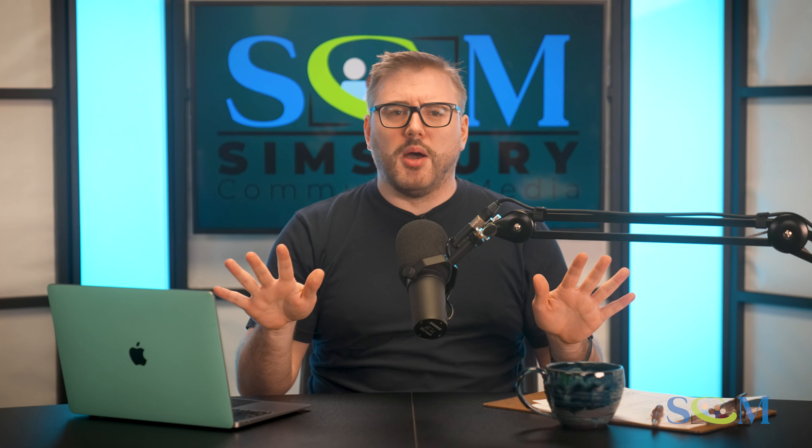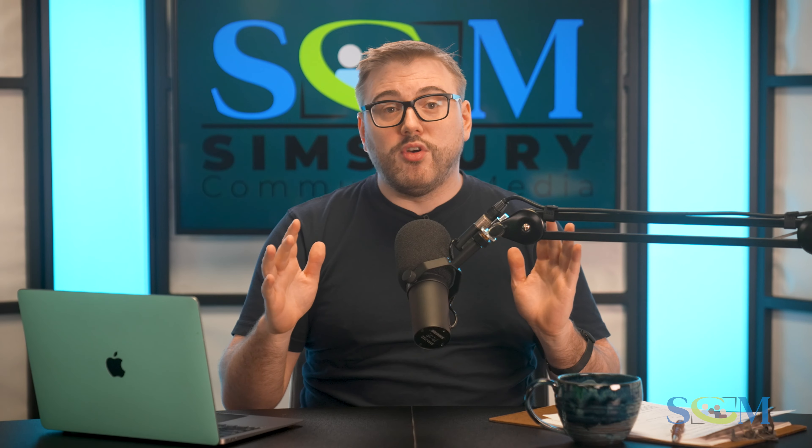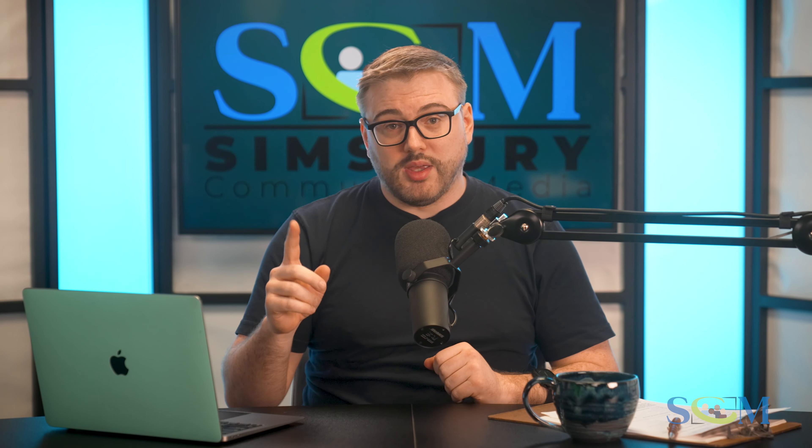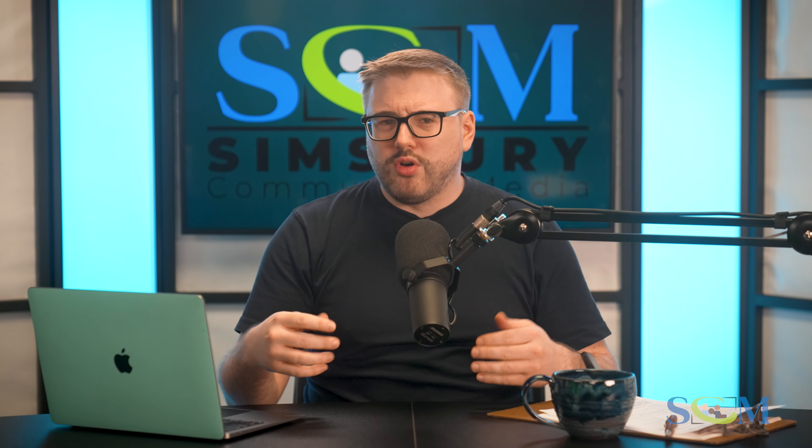It's a good idea to arrive at least 15 minutes to a half hour early before the meeting begins. This will leave time to work out any bugs that may occur when setting up. Enter using the door above the police station. If the door is locked, enter the code given to you by SCM staff on the keypad to the left of the door.